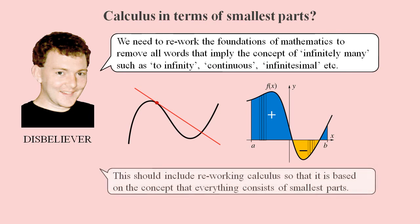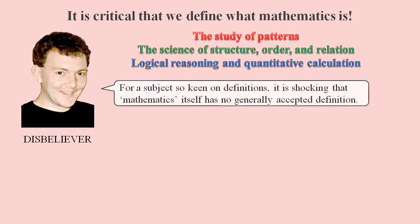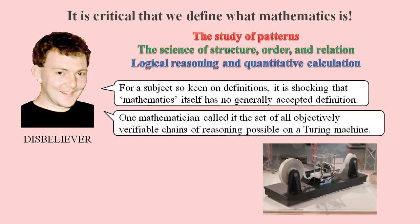Surely we need to rework calculus to be based on smallest parts. We need to start from the very beginning by defining exactly what the subject of mathematics is all about. We have the crazy situation at the moment where there is no generally accepted definition for mathematics. One attempted definition is that mathematics is the set of all objectively verifiable chains of reasoning possible on a Turing machine.